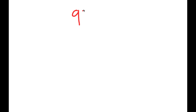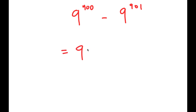All right, so in this video I'm solving the problem 9 to the power of 900 minus 9 to the power of 901. To solve this, I'm going to first start by rewriting 9 to the power of 901 as 9 to the power of 900 plus 1.